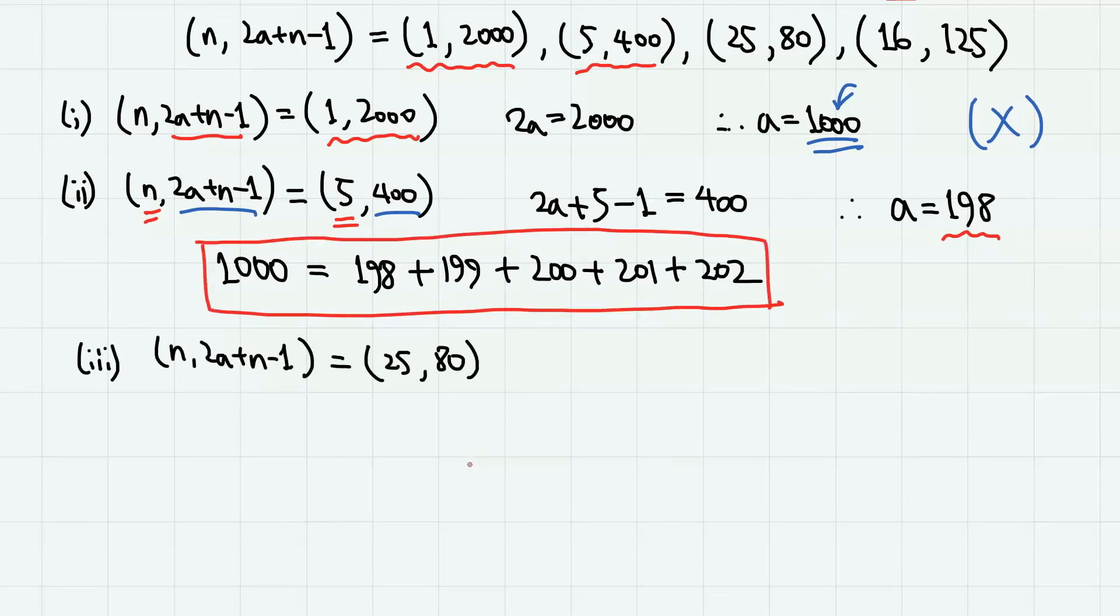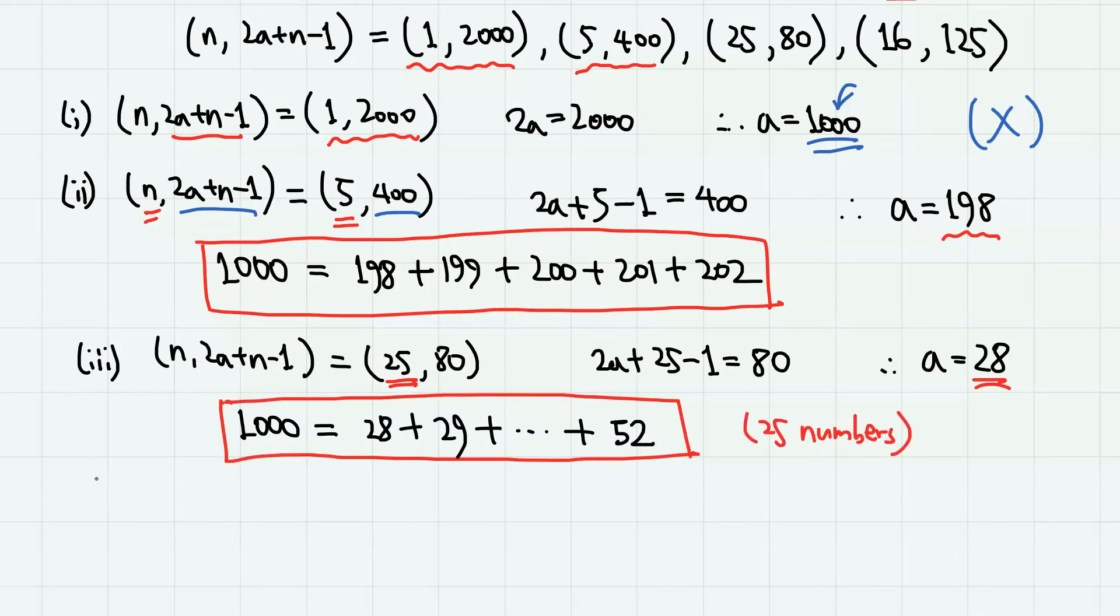Next, when n equals 25 and 2a plus n minus 1 equals 80, it means 2a plus 25 minus 1 equals 80. Therefore, we obtain a equals 28. So there are total 25 consecutive natural numbers, and the least of them is 28. So we have starting from 28 plus 29 plus, and we have total 25 numbers. So the largest one is 28 plus 24, which is 52. So we have found another one.